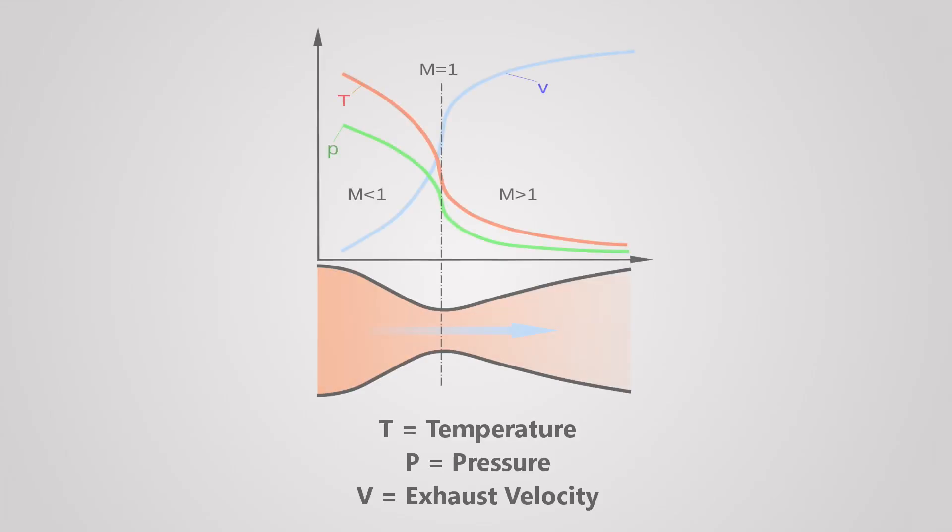Compressible flows behave a bit differently. Flow rate is no longer tied to pipe cross-section, since the density of a compressible fluid can change. This means for a gas flowing at speeds above Mach 1, velocity can actually increase as pipe cross-section increases.